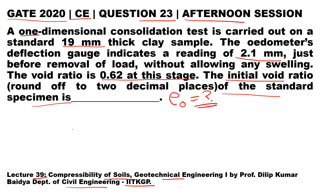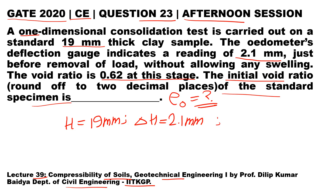Let us see what data is given. The height of the sample is 19 mm, the deflection of the odometer reading is 2.1 mm — meaning the soil is compressed by 2.1 mm during the test — and the final void ratio e2 is 0.62. The initial void ratio e0 is what we need to find.